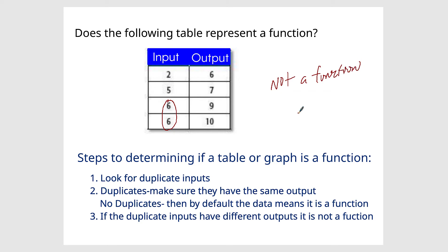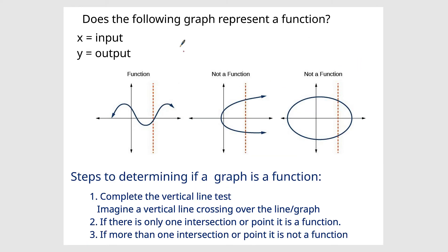So sometimes you might get a question, or at least it says, does the following graph represent a function? And so there is a way of determining this. I'll talk about each of these graphs. But what you're going to complete to determine if a graph is a function is the vertical line test. You're going to imagine there's like a line going over these graphs. And as long as there's only one intersection or point, it is a function. If there's more than one intersection or point, it is not a function.